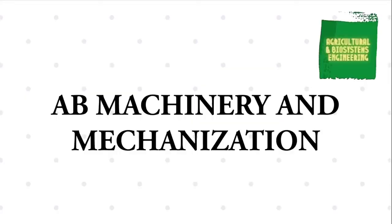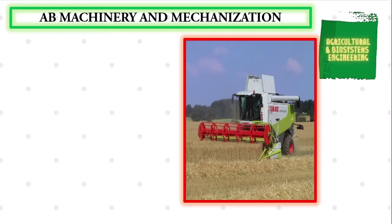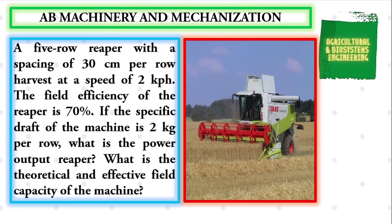Welcome to another tutorial video regarding AB Machinery and Mechanization. This time, we will be solving the problem: A 5-row reaper with a spacing of 30 cm per row, harvesting at a speed of 2 km per hour. The field efficiency of the reaper is 70%. If the specific draft of the machine is 2 kg per row, what is the power output of the reaper? What is the theoretical and effective field capacity of the machine?